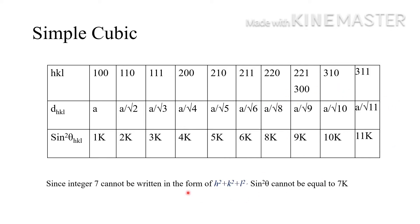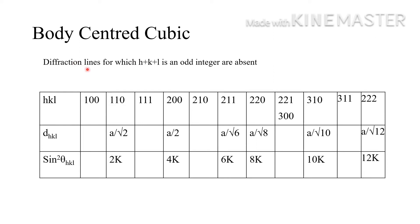Now for body centered cubic, diffraction lines for which h + k + l is an odd integer are absent. Looking at the planes: 100 gives h+k+l = 1 (odd), so it is absent. 110 gives h+k+l = 2 (even), so it is present. The planes present for BCC are: 110, 200, 211, 220, 310, 222, etc.